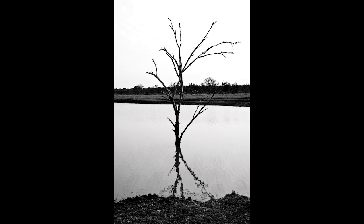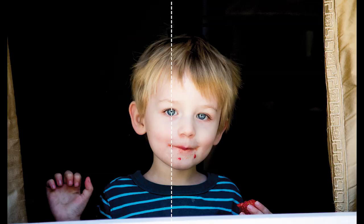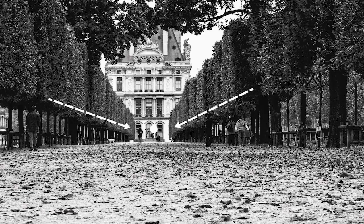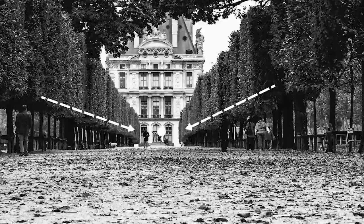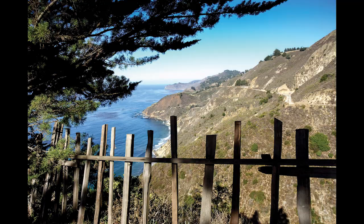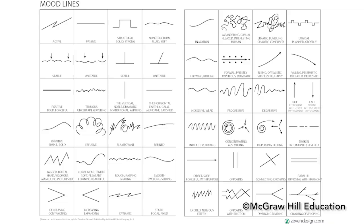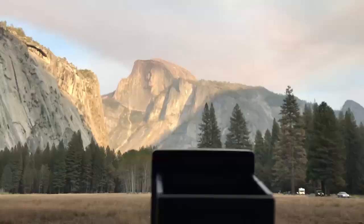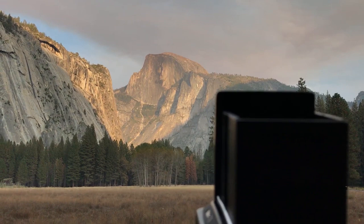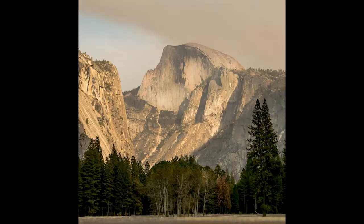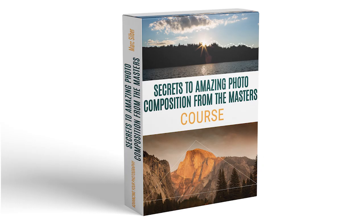In my course, The Secrets to Amazing Photo Composition from the Masters, you're going to learn that every picture tells a story — but how do you tell yours? You'll learn composition secrets that master artists have used for centuries, how to pull your viewer into the center of interest, how to use contrast to build excitement, the many ways to frame your image, and how mood lines can affect your photo. I give you 83 composition techniques and how you can use them like a great chef uses recipes to create amazing meals. Jump on board with this course right now.